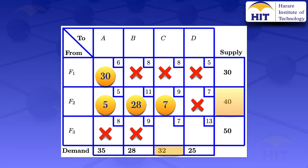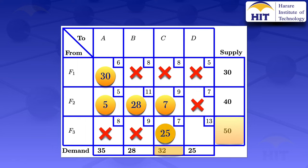We now move on to the next possible cell, which is F3 to destination C. We consider the supply — the 50. The demand is 32, but we have already allocated 7 there. So when looking at the demand, what we have to allocate is 32 minus 7, which gives us 25. We look at the minimum of 25 and 50, and the minimum is 25. We allocate 25 in that cell.